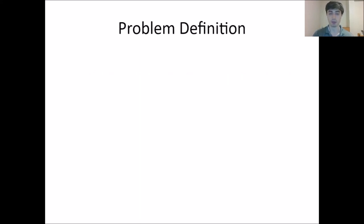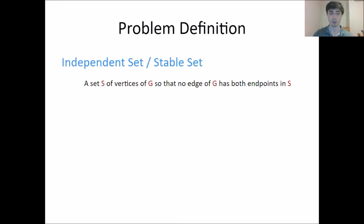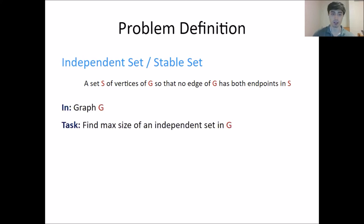Let me start off with a couple of definitions. First, we have an independent set, also known as a stable set. It is a set S of vertices of G such that no edge of G has both endpoints in S. The input to our problem is a graph G, and what we want to do is find a maximum size independent set in G.